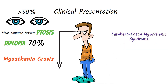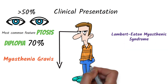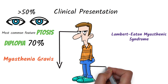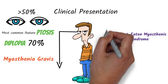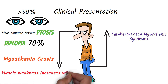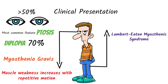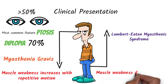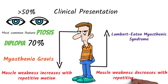Lambert-Eaton Myasthenic Syndrome starts at the proximal lower limb muscles and moves upwards. In Myasthenia Gravis, muscle weakness increases with repetitive movements, but in Lambert-Eaton Myasthenic Syndrome, it improves with repetitive motion.